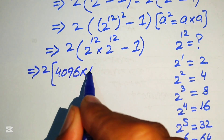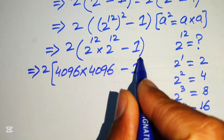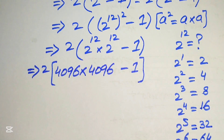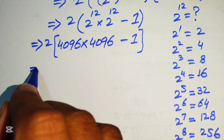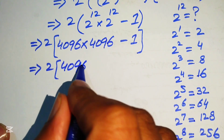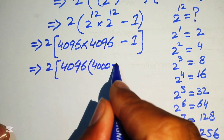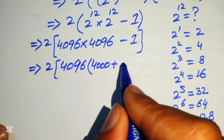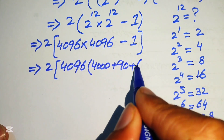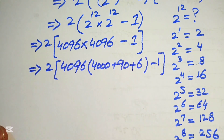In the next step we break this value: we write 2 times 4096, and we write the second 4096 as 4000 plus 90 plus 6, minus 1.